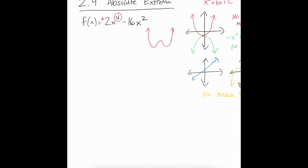Since this is to the fourth power, I'm going to have one little hiccup in the middle. Because the power is even, I know it's going to go either up in both directions or down in both directions. And because the leading coefficient is positive, I know it's going up in both directions. So what does this tell me? First of all, it tells me there is no absolute maximum. So I'm only looking for the absolute minimum. Where should I look? I need to find the critical points — find the derivative, set it equal to zero.